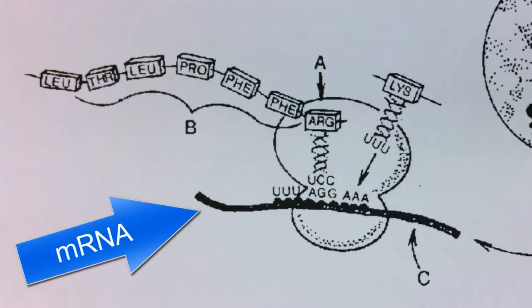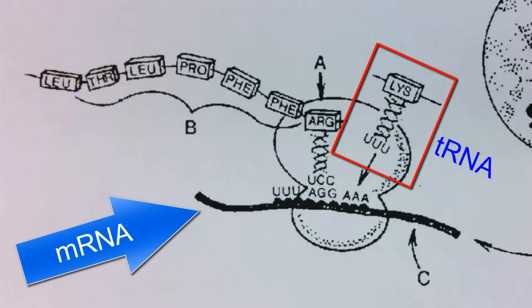The messenger RNA contains three base sequences called codons. Each codon calls for a specific amino acid. There's also another type of molecule called transfer RNA involved.